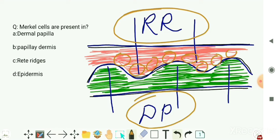Therefore, the right option would be rete ridges. If rete ridges are not in the options, then the right option would be epidermis.